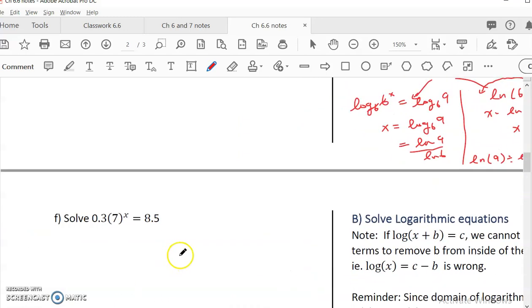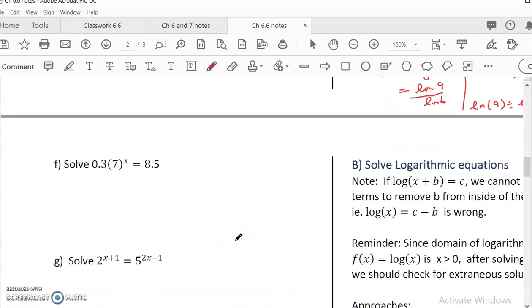So we'll continue to do one more. So this one is 0.3 times 7 to the x equal to 8.5. Now, can I add ln right away? I cannot write this as 7 to the something. No, I cannot, because there is a multiple that is outside of the base. So we have to clean up first. So clean up everything. Look at the base. The only base is 7, not 2.1. So anything outside of the base, you have to clean it up.